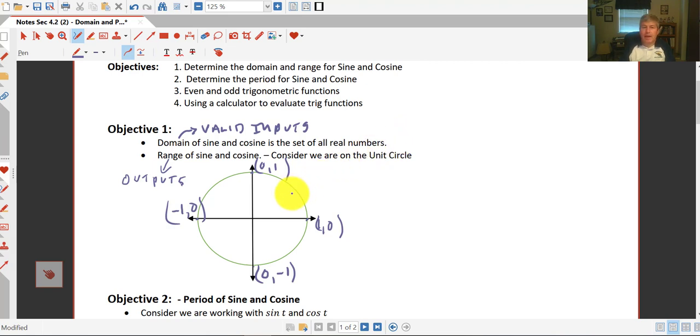Positive angles, negative angles. We've got those multiple rotations that we do, so there aren't any invalid inputs for the domain of sine and cosine. Those are never going to be undefined, so we can put in positive numbers and negative numbers.